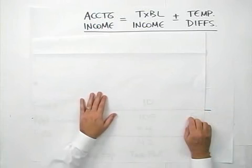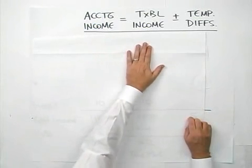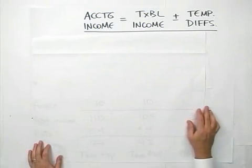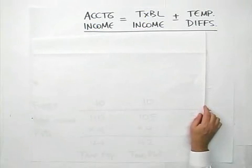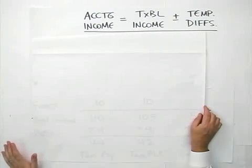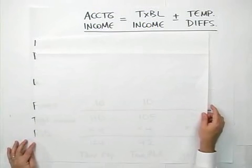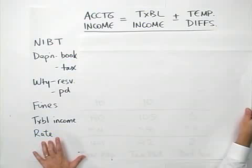The worksheet is essentially a reconciliation between your net income before taxes on the income statement and the taxable income that you see on the tax return. Start with three columns: accounting income equals taxable income plus or minus temporary differences. On the left-hand side, we're going to list a number of different things, starting with net income before taxes, and a few examples of things which can be temporary or permanent differences.